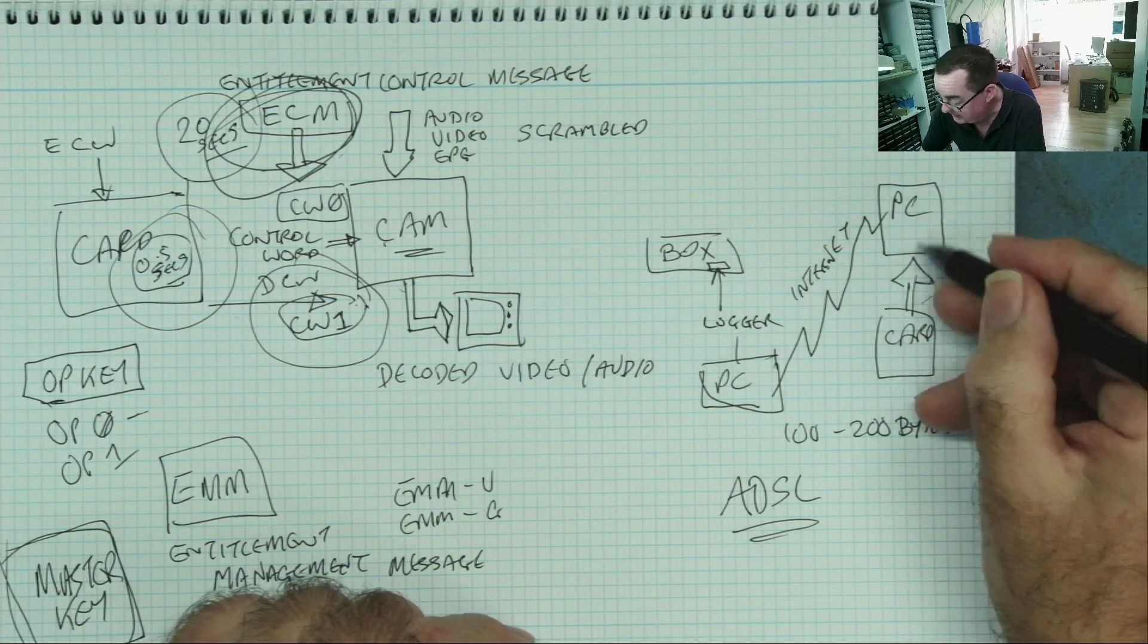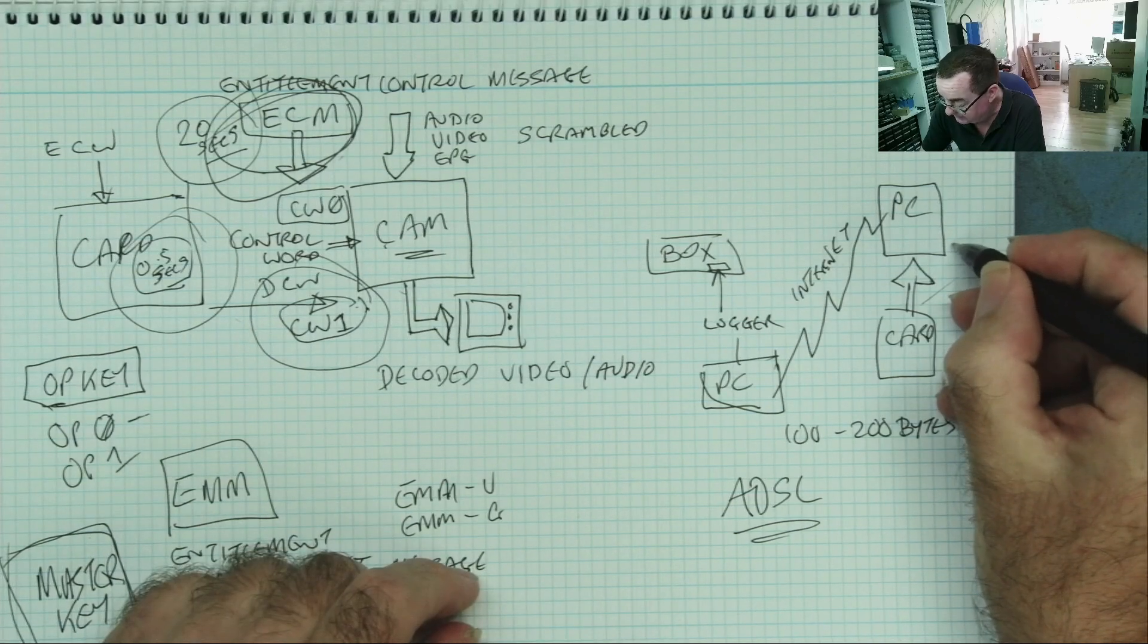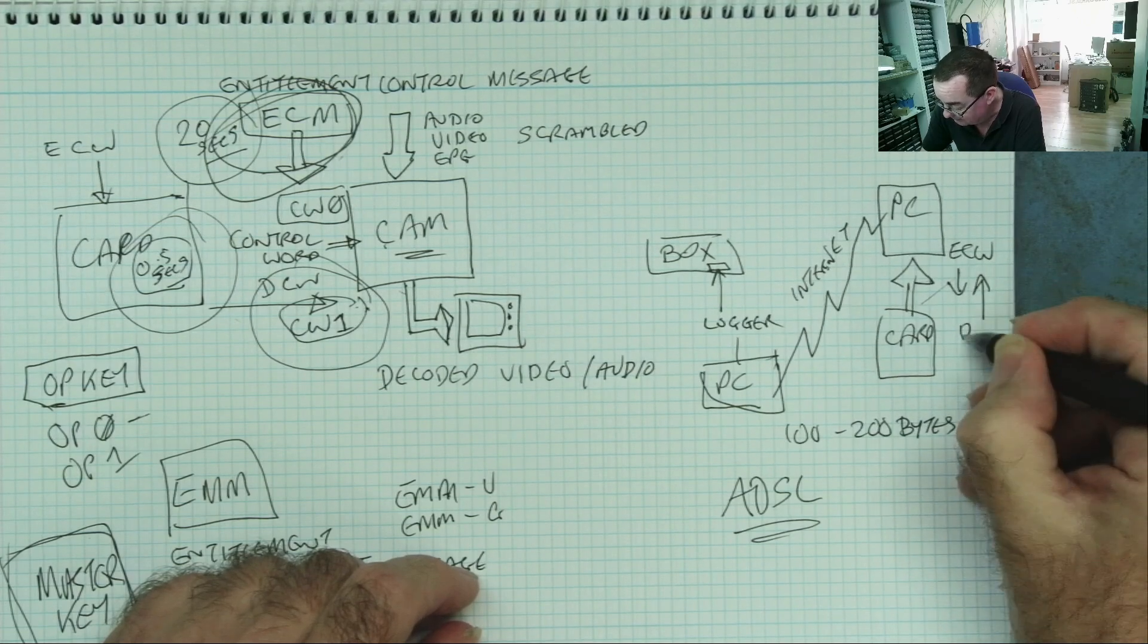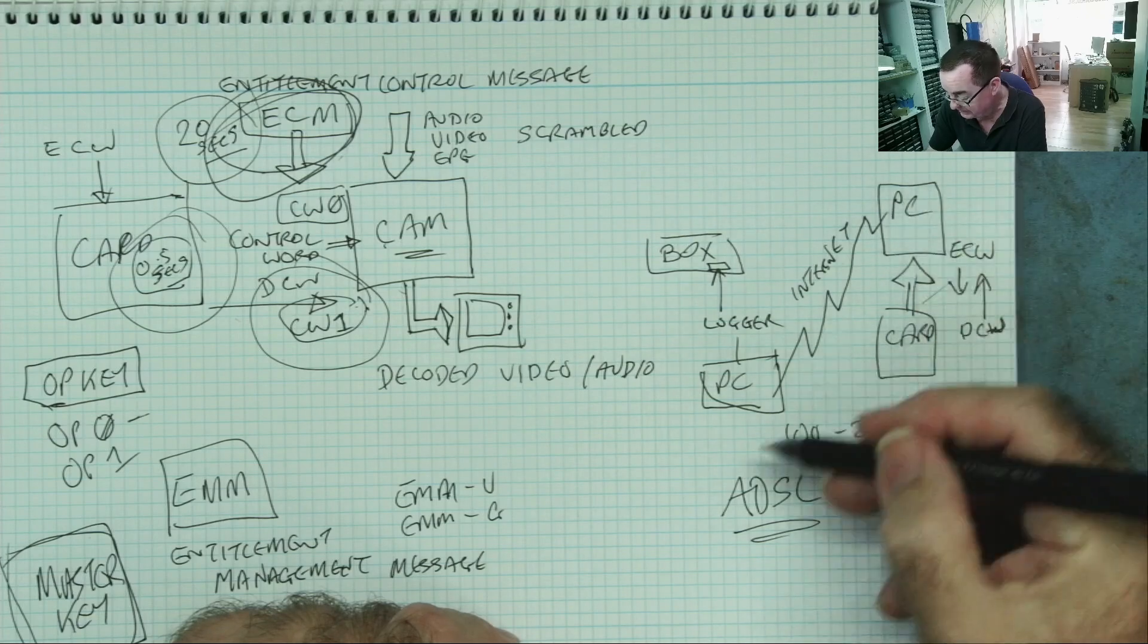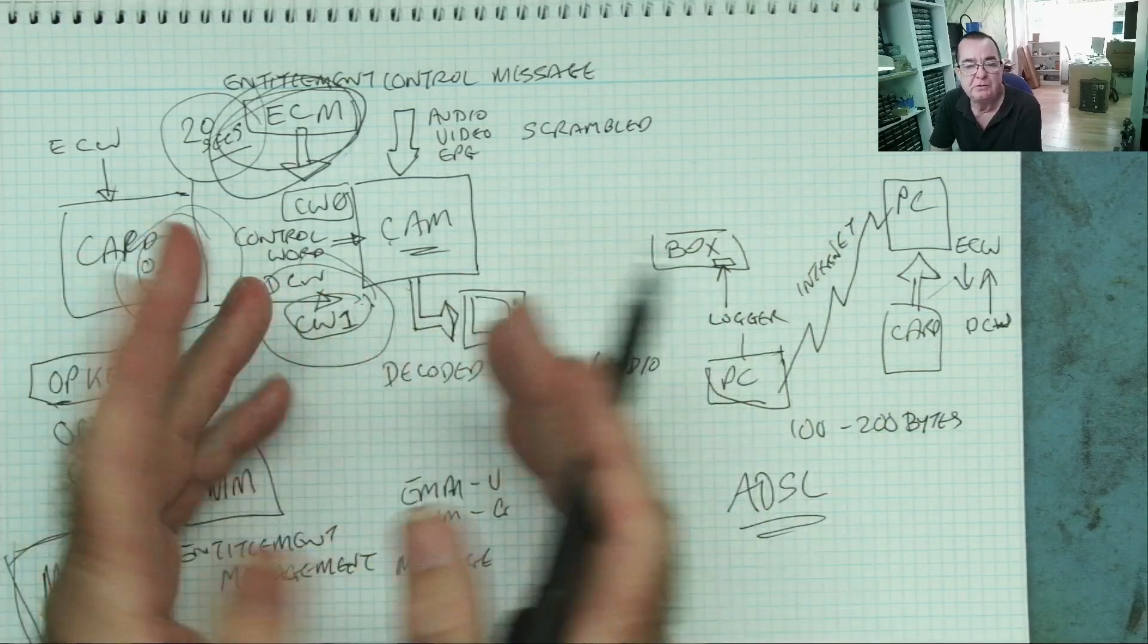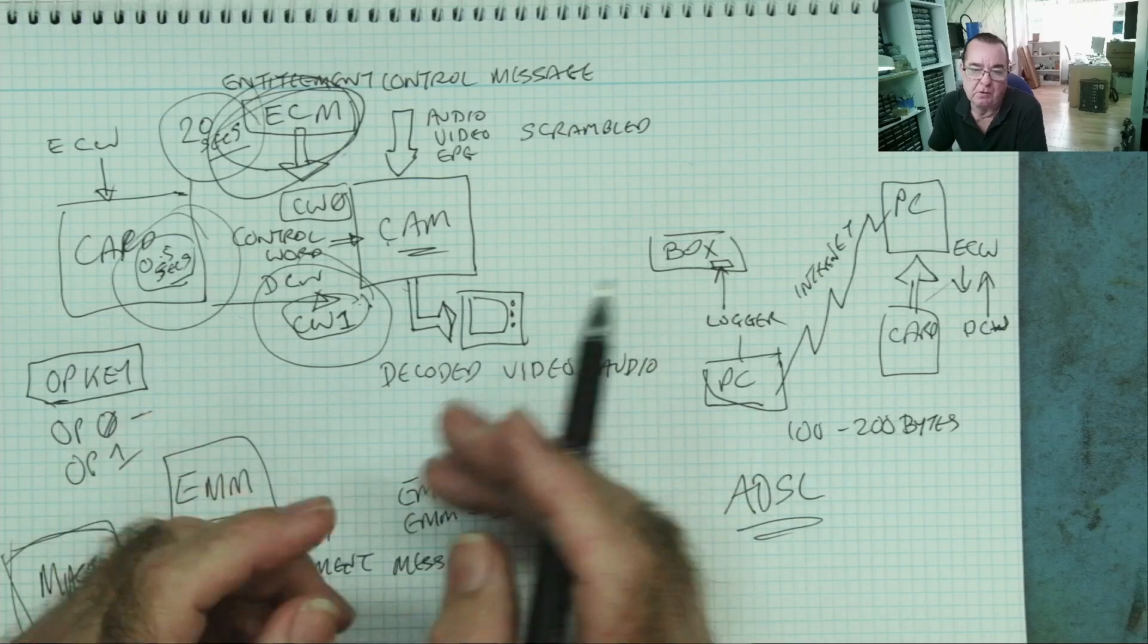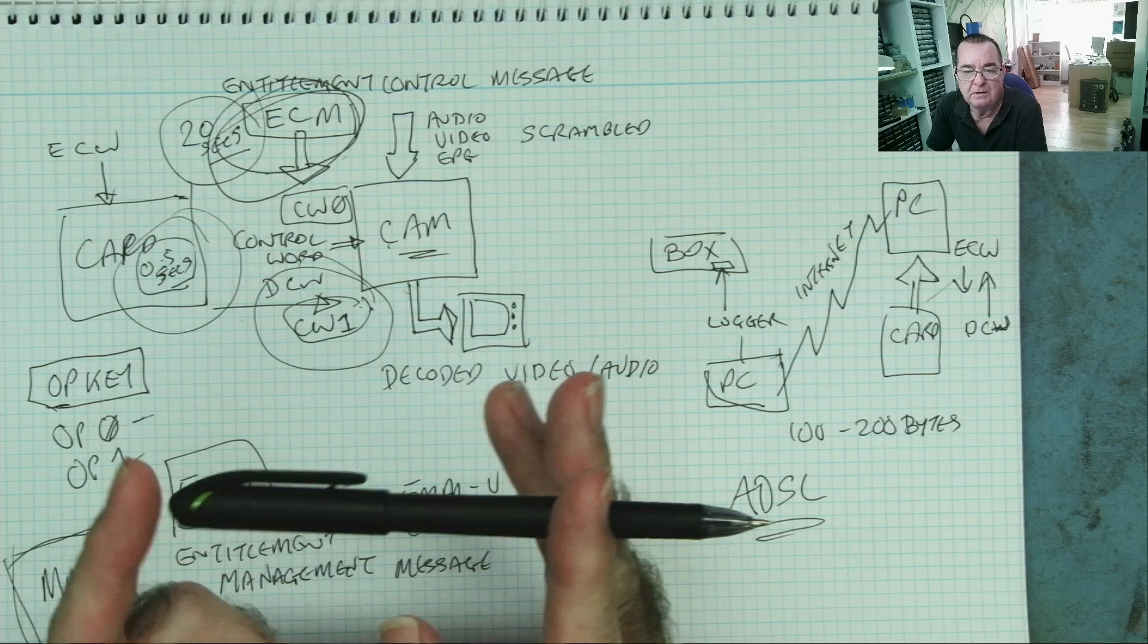The way to break this was quite simple. Take the card out of the receiver and connect the card to a computer. Instead of having the card in the receiver, we'll put the box. We insert a logger. This is like a PCB with some contacts on that connects where the card would connect. And the logger has a serial port on, USB, and connects to a PC.